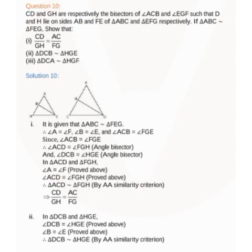For part 2, in triangle DCB and triangle HGE: angle DCB = angle HGE (from the bisectors) and angle B = angle E (given, triangle ABC ~ triangle FEG). Therefore by AA, triangle DCB is similar to triangle HGE.